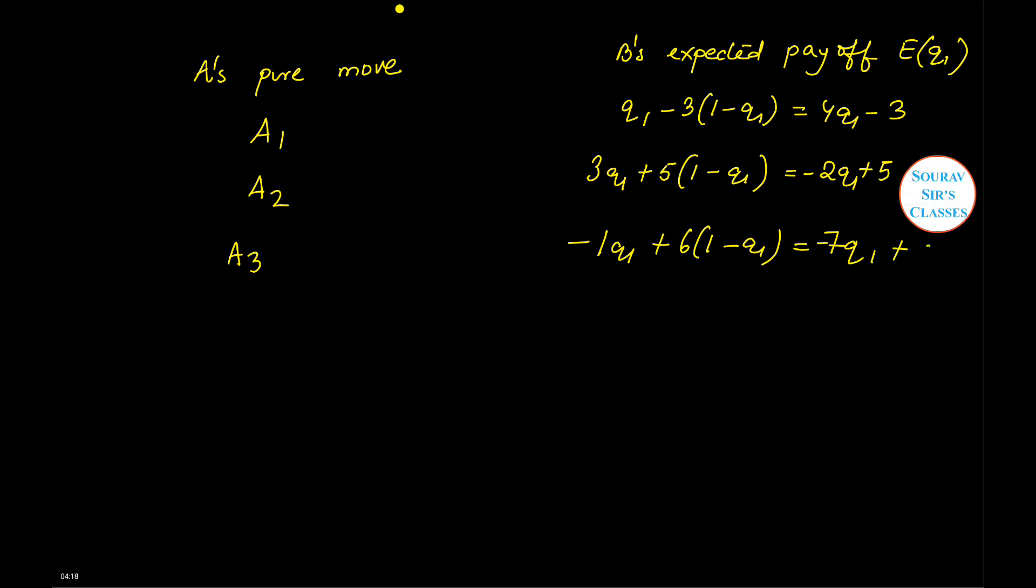For A3, minus 1q1 plus 6(1 minus q1), if you simplify this you get minus 7q1 plus 6. A4: 4q1 plus 1(1 minus q1) equals 3q1 plus 1. A5: 2q1 plus 2(1 minus q1) equals 2. And if A's pure move is A6, then B's expected payoff will be minus 5q1.